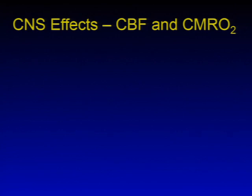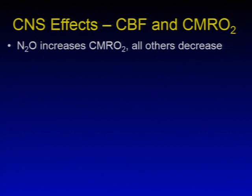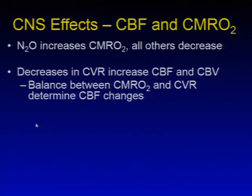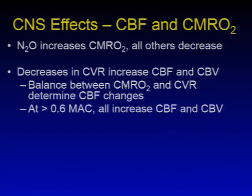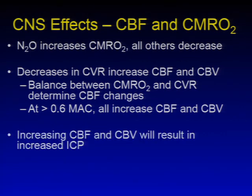When we turn to CNS effects, the biggest things to talk about are global cerebral blood flow and the cerebral metabolic rate of oxygen, CMRO2. Nitrous increases CMRO2, but all the other agents end up decreasing it. The agents also decrease cerebrovascular resistance, which ends up causing an increase in CBF and cerebral blood volume. When we get over 0.6 MAC, they all end up increasing CBF and cerebral blood volume in ways that might be detrimental for patients with a brain lesion. The increasing blood volume causes an increase in ICP as well, which is why we don't use high concentrations of inhalationals in patients with large brain tumors.